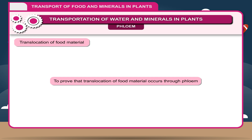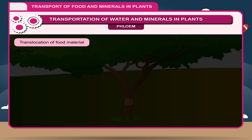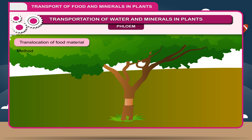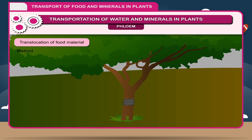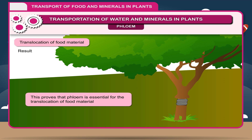Activity — To prove that translocation of food material occurs through phloem. Method: In a woody stem, all the outer parts — i.e., phloem — are removed in the form of a ring or girdle, including phloem along with the bark. Keep it moist with a wet cloth around the ring. After 2–3 days, a swelling is observed just above the ring, due to accumulation of food material in the tissues, as the prepared food from leaves cannot reach below the ring. Result: This proves that phloem is essential for the translocation of food material.